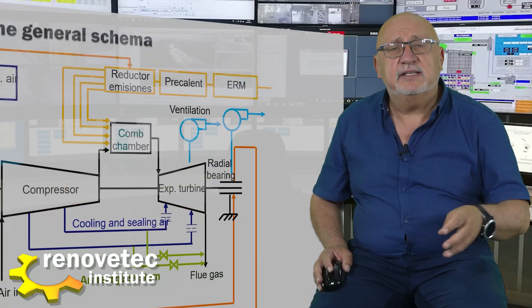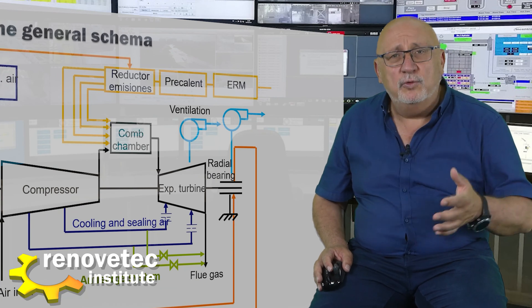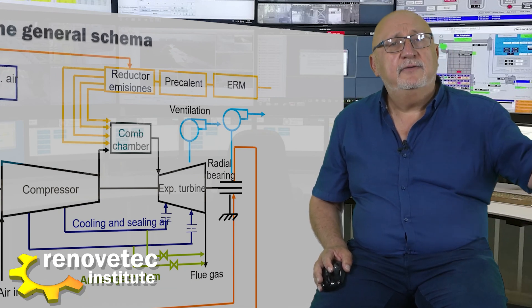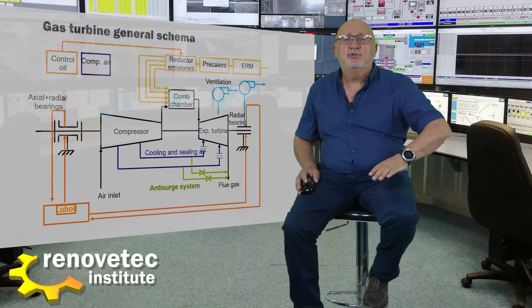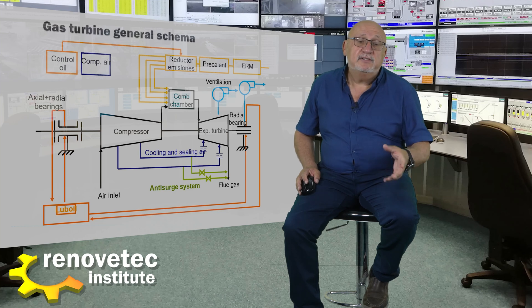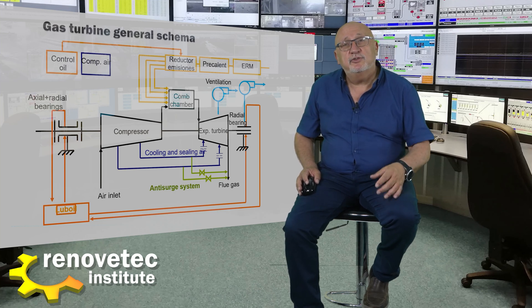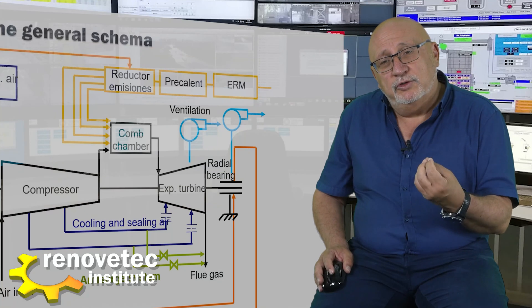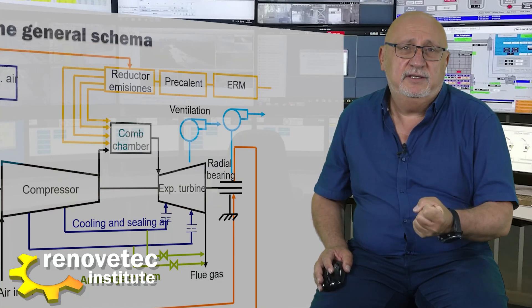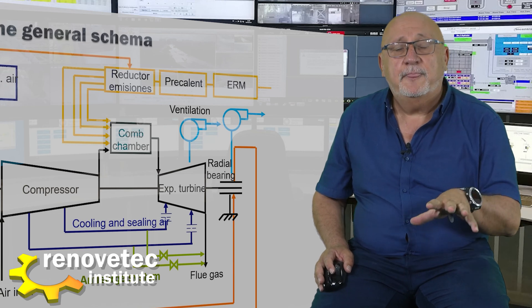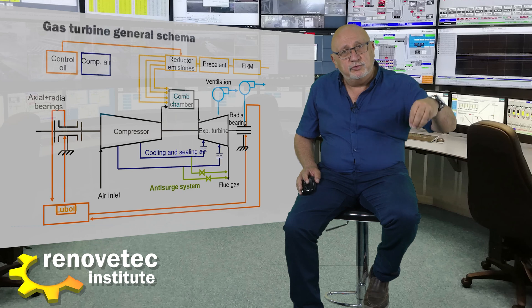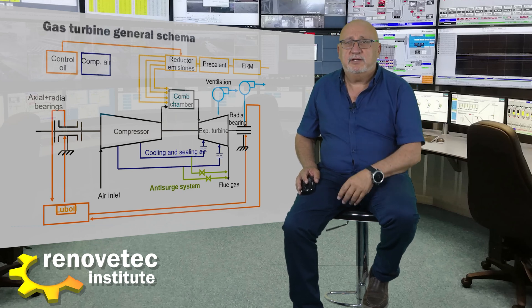Sometimes the ventilation system that cools the enclosure is composed of a fan that introduces air inside. In other situations, a system is installed to evacuate the heated air. Sometimes you have two systems — one to introduce air and the other to extract it.